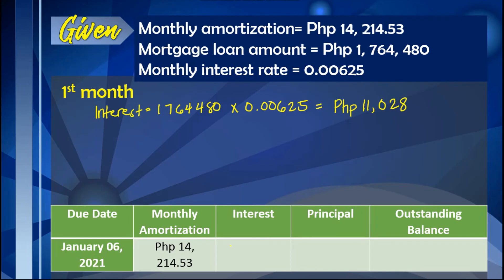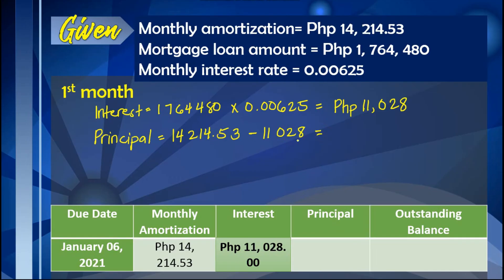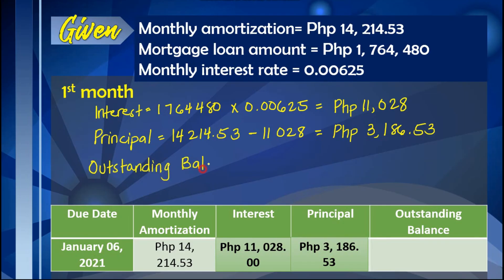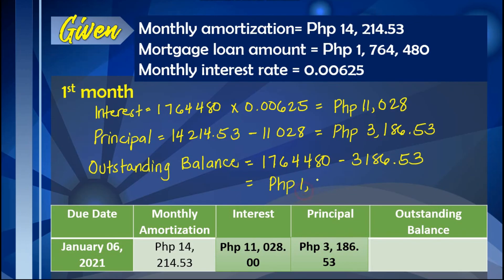To find the principal amount for the first month, we subtract the interest from the monthly amortization. The result is $3,186.53 — this is the principal paid in the first month. To find the outstanding balance, we subtract the principal from the mortgage loan amount. The result is $1,761,293.47, which is the outstanding balance that still has to be paid in the following months.